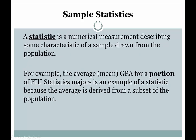Compare that to a sample statistic. A statistic is a numerical measurement describing some attribute of a sample drawn from the population. The big difference here is this word 'sample' — it's describing a characteristic or an attribute of a sample as opposed to a population. The average mean GPA for a portion of FIU statistics majors is an example of a statistic, because the average is derived from a subset of the population.